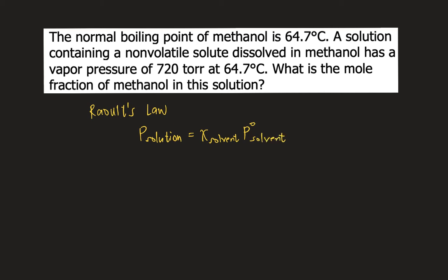P-solution here is the vapor pressure of the solution. Chi solvent is the mole fraction of the solvent. In this case, the solvent is methanol, so chi solvent is the mole fraction of methanol, and P-naught solvent is the vapor pressure of pure solvent.